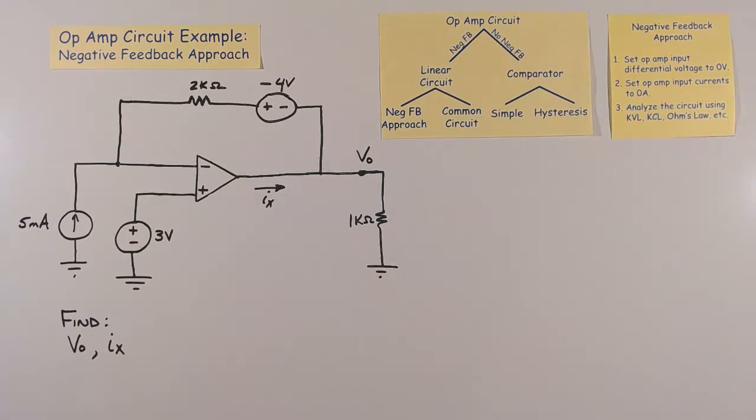And then we analyze the circuit using Kirchhoff's voltage law, Kirchhoff's current law, Ohm's law, or whatever we need to, to find the unknowns we're looking for. So let's start by setting the input differential voltage to 0.